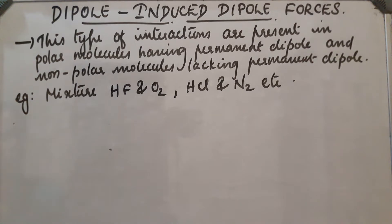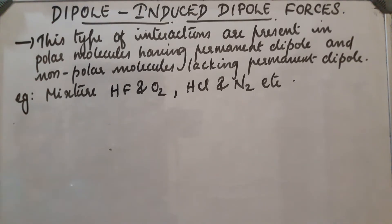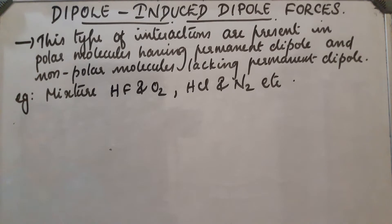When a non-polar molecule is brought near a polar molecule, the positive end of the polar molecule attracts the electron cloud of the non-polar molecule. As a result, a polarity is induced in the non-polar molecule.